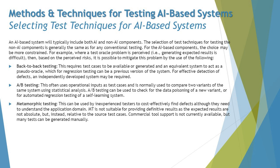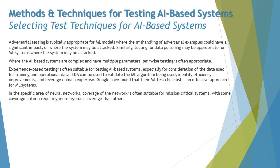Adversarial testing is typically appropriate for ML models where mishandling of adversarial examples could have a significant impact or where the system may be attacked. Testing for data poisoning may also be appropriate for ML systems that may be attacked. Adversarial testing is more about security — understanding vulnerabilities that could lead to an adversarial impact on the system.